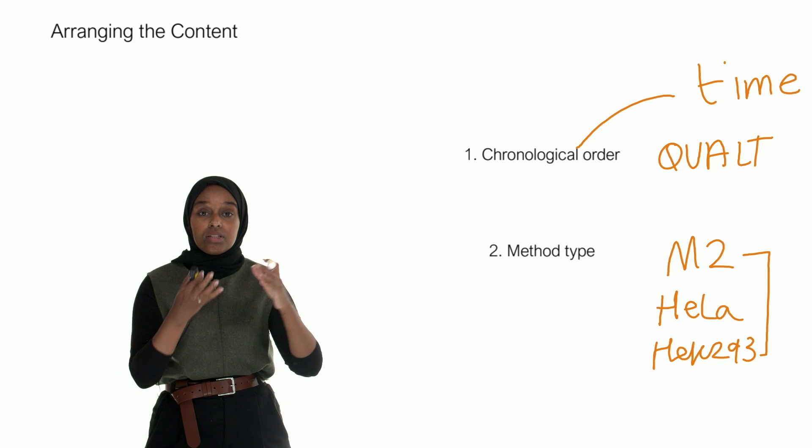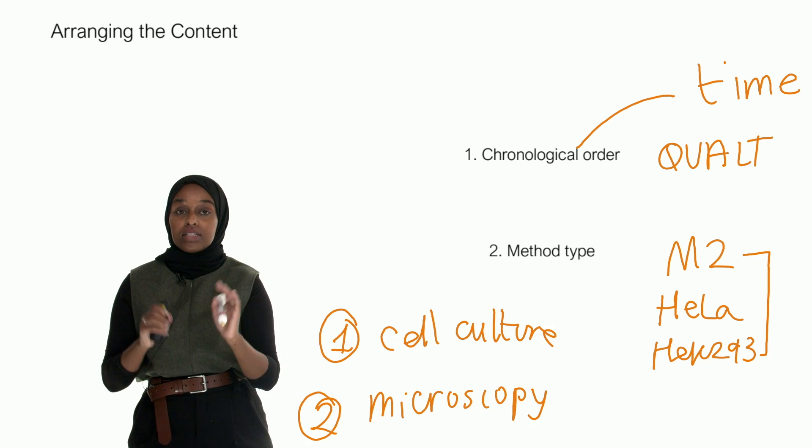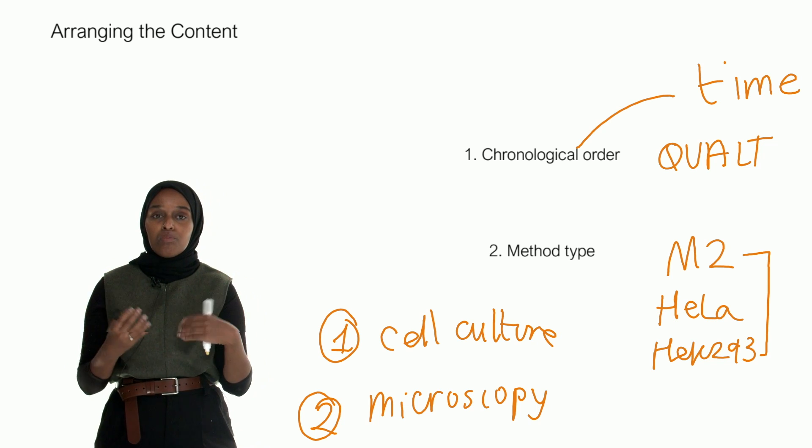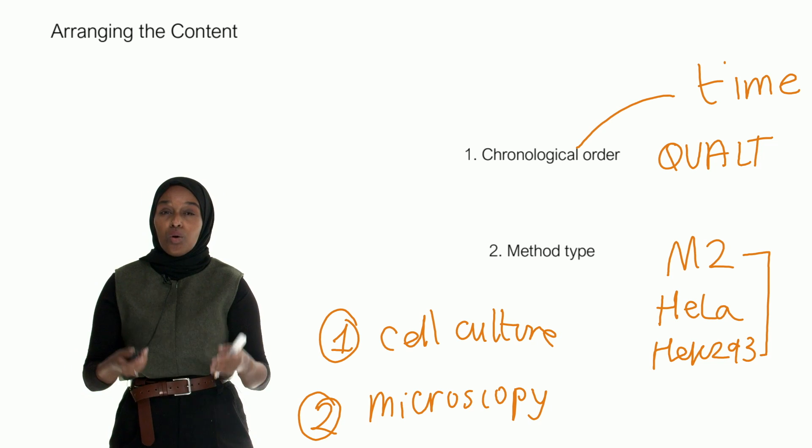Look at your content, take a look at the list of methods that you've written, and try to think of an order. What makes sense if someone were to replicate your work? What order would make sense for the content?